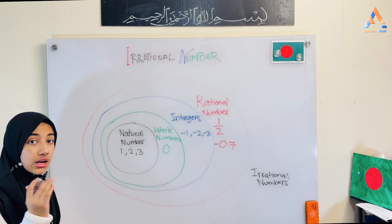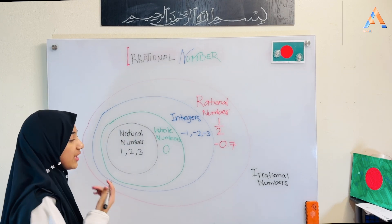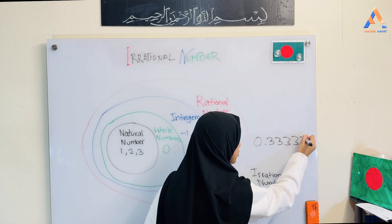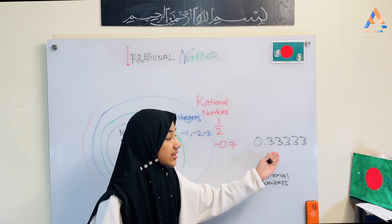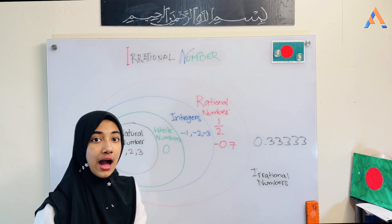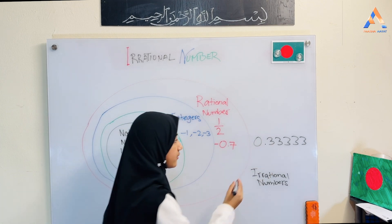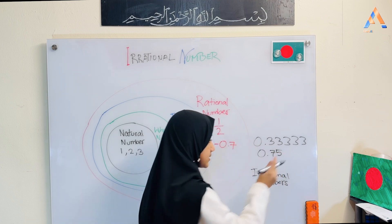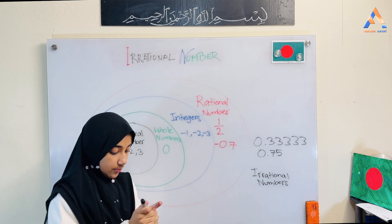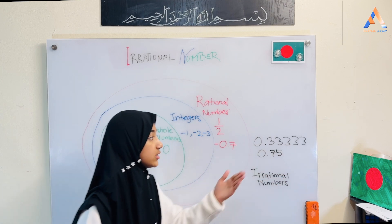Recurring means that it will repeat. When we have the decimal, for example, 0.3333... — this means it just goes on; it keeps repeating, so it is a recurring decimal. A terminating decimal means it stops — not going on forever — for example, 0.75. So a rational number is also a recurring decimal or a terminating decimal.